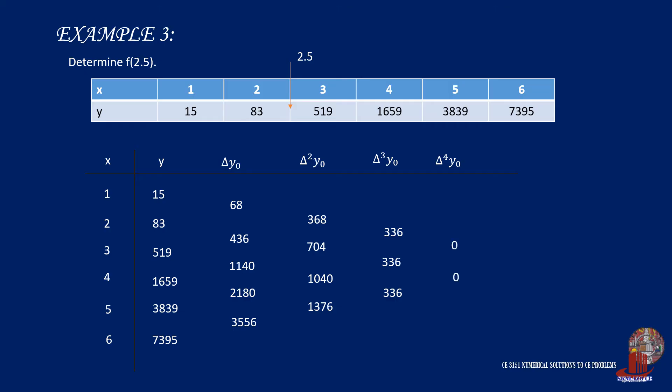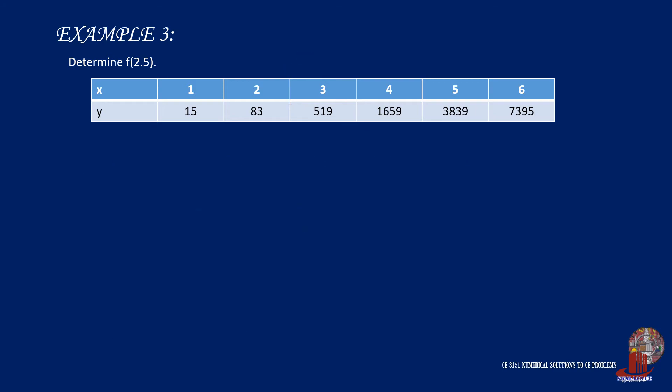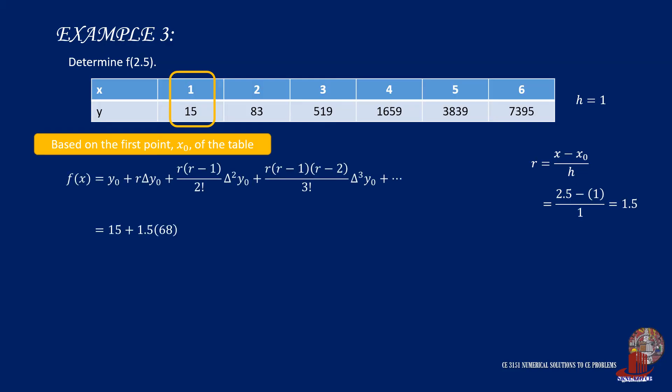In this first solution, we are still going to use the leading forward differences. Since we are using the leading forward differences, we would take x0 as the first point of the table, which is 1, 15. h is 1, and r is solved as the required, which is 2.5 minus x0, and that is 1, all over h, so we have 1.5. Plug these values into the equation to arrive at a simplified computation of 15 plus 102 plus 138 minus 21, so f(2.5) is 234.